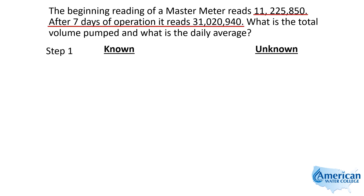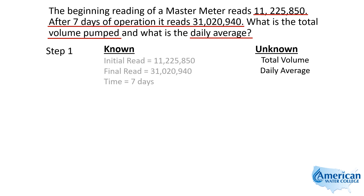We have our start and our stop — our initial reading and our final reading — and we're supposed to take those and determine the total volume pumped and the daily average. So we write down our information. Notice we have our final reading, our initial reading, and then our total time of seven days.